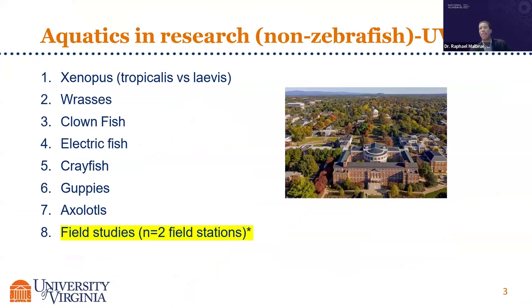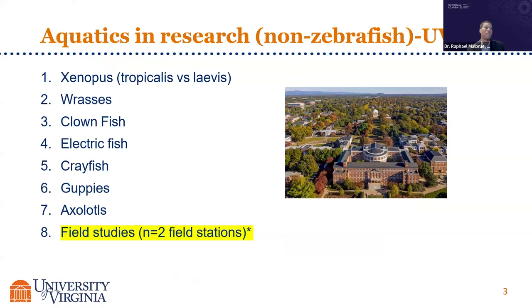Here at UVA and at prior places I've worked, you can see that every one of these species requires different considerations. Also, several institutions have field stations, some on the coast, and we shouldn't forget about field stations and our role in recommendations as it pertains to whether animals are coming back to the institution or staying at that field station off main campus. This is an important thing to highlight.